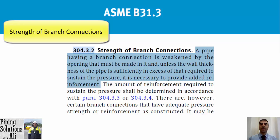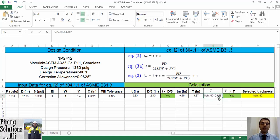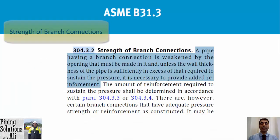A pipe having a branch connection is weakened by the opening that must be made in it, and unless the wall thickness of the pipe is sufficiently in excess of that required to sustain the pressure, it is necessary to provide added reinforcement. Referring to episode 13 of this course, the selected wall thickness from the standard is greater than what is required to sustain the pressure, because when the wall thickness calculation results in a thickness not available in the standard, we round it up to the nearest thickness per the related standard considering the pipe's material.